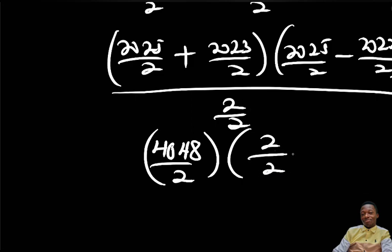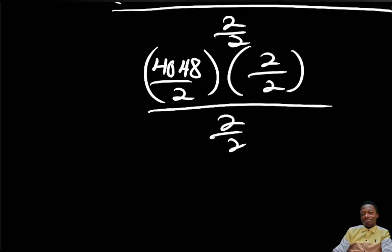All right, so here we do the cancellation. 2 goes to 4048 as 2024. 2 cancels 2, making it 1 here. 2 cancels 2, making it 1.